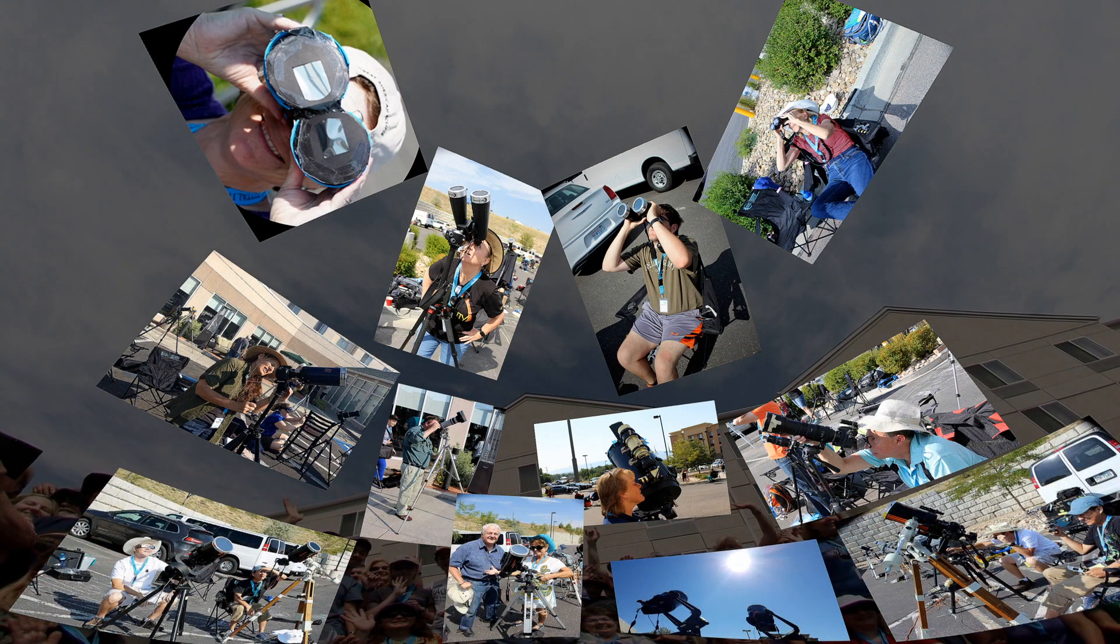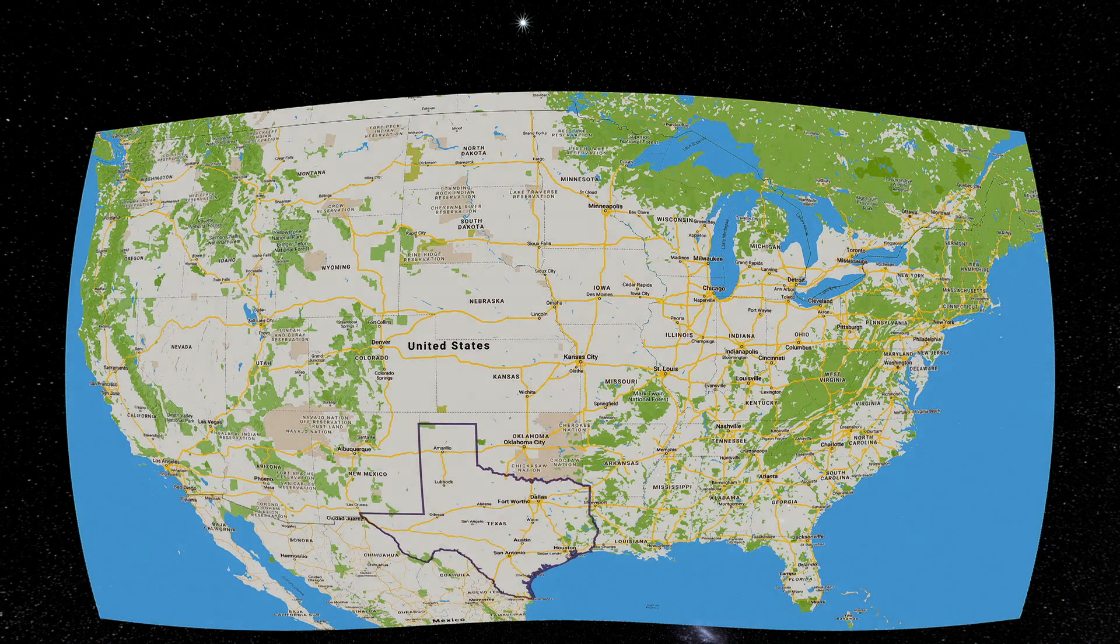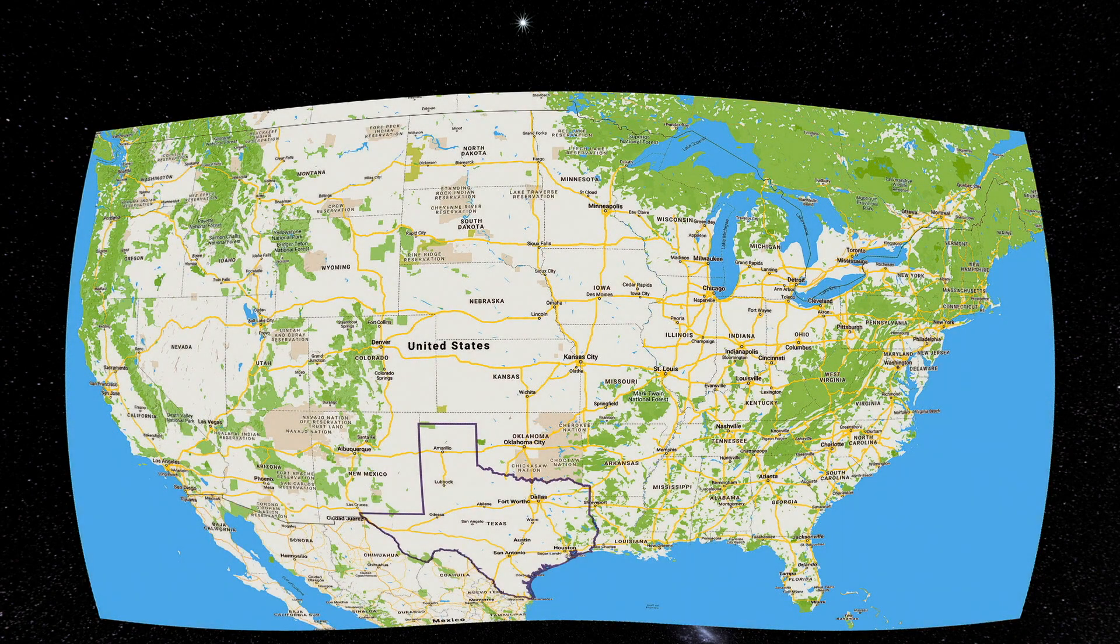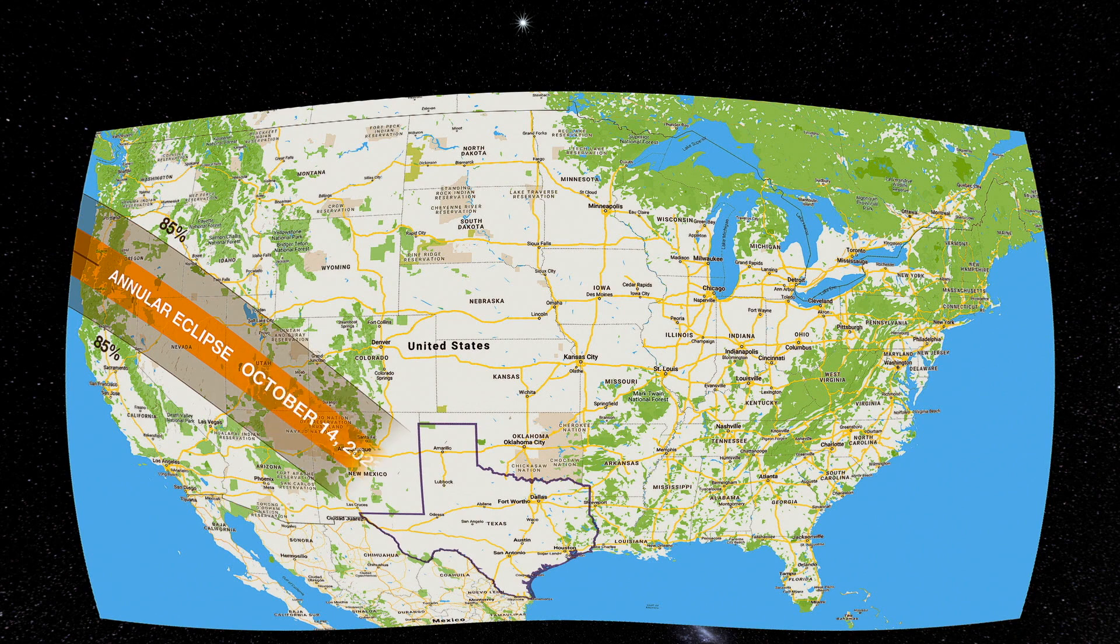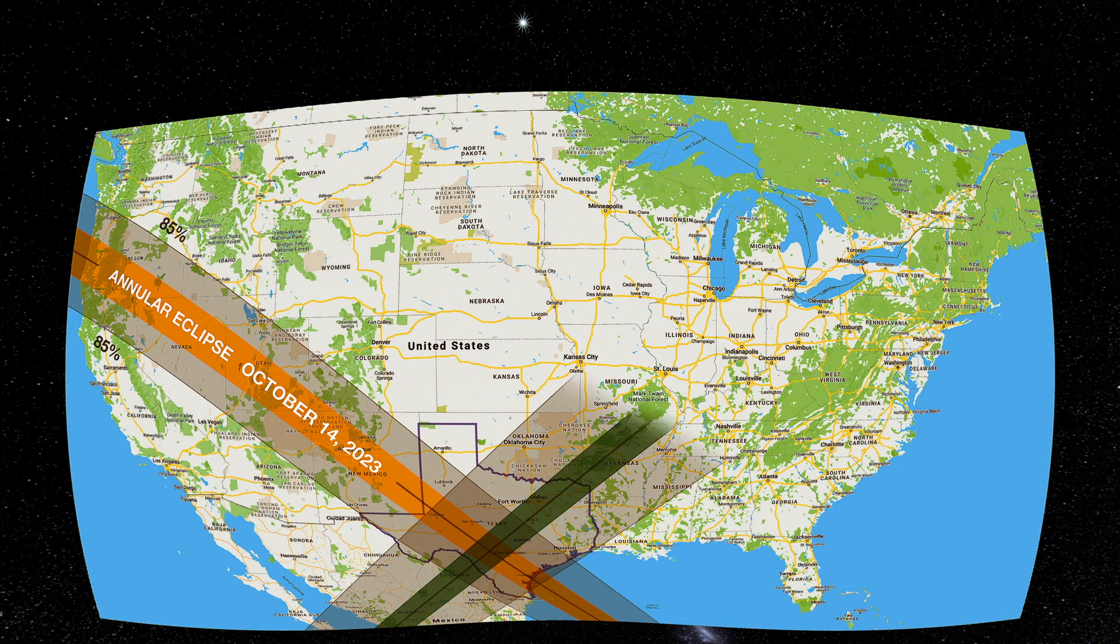High magnification telescopes and telephoto lenses must be constantly adjusted as the earth rotates under the moon's shadow. Sturdy tripods that can track the sun work best. These eclipse observing techniques work for any eclipse, including the Annular Eclipse of October 14, 2023, and the Total Eclipse of April 8, 2024.